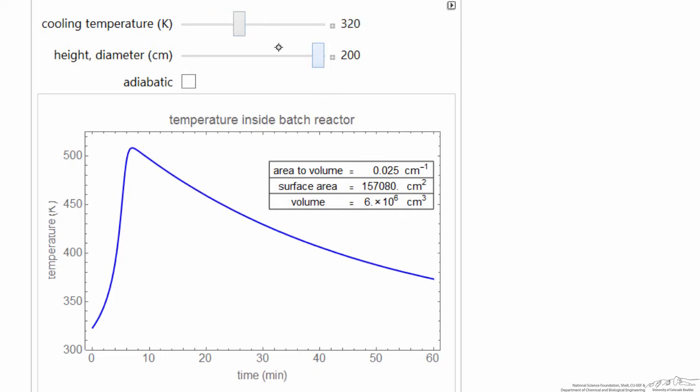Of course if I increase this cooling temperature, then even at the lower temperatures, I get a very large exotherm, so you can use this to understand how changing the surface area to volume affects the reactor temperature. This is a very large temperature increase in a very short time.